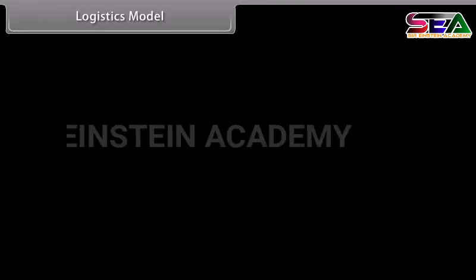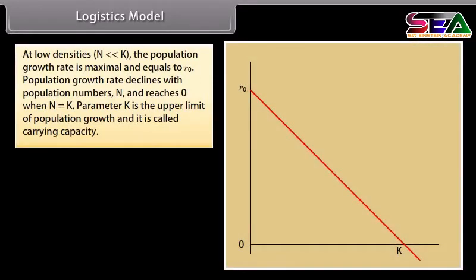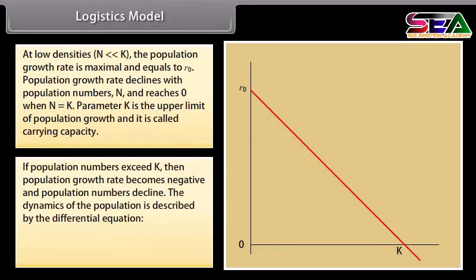The logistic model suggests that the rate of population increase may be limited — that is, it may depend on population density. The growth rate is given by: r = r₀ × (1 − N/K). At low densities (N much less than K), the population growth rate is maximum and equals r₀. Population growth rate declines as N increases and reaches 0 when N = K. K is the upper limit of population growth, called the carrying capacity. If population numbers exceed K, the growth rate becomes negative and population numbers decline. The dynamics are described by: dN/dt = r₀N(1 − N/K).